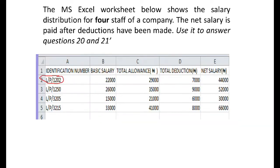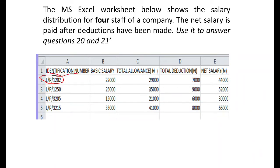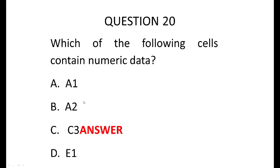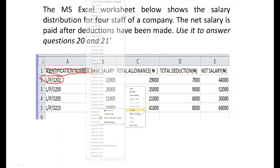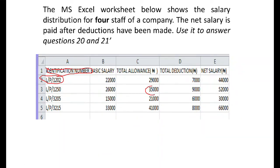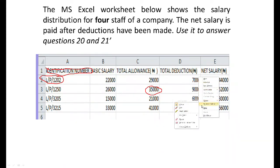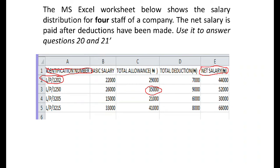In the question we have A1 and A2. A1 contains alphabetic data. A2 contains alphanumeric data because it contains both letter and number. Now let's move to C3 — this is column C and row 3. C3 contains numbers — that is numeric data. Now E1 on this table contains net salary and an error sign, so that is alphabetic data. So that can never be the answer. The answer is C, which is C3.